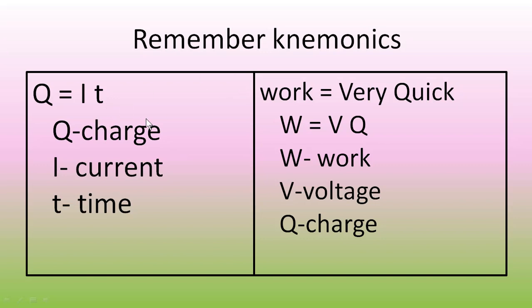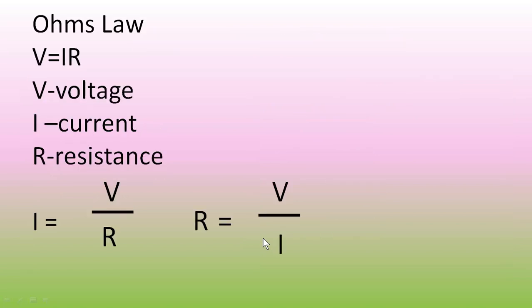Also, you have to remember another important mnemonic: Q is equal to I into T. Q is the charge, I is the current, and T is the time. Work is equal to very quick - this is the mnemonic. You should not take it out. Work is equal to very quick is the original relation, but this is used only for easy remembrance purpose. W is equal to V into Q. W is work, V is voltage, and Q is charge. So W is equal to V into Q. Don't make it as your original relation. Work is equal to very quick.